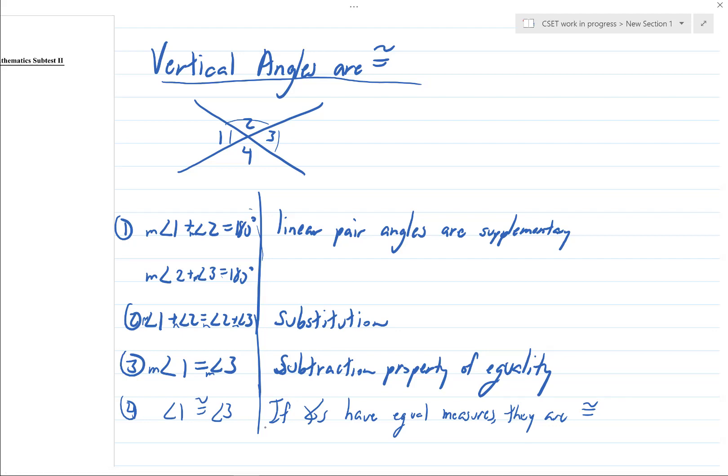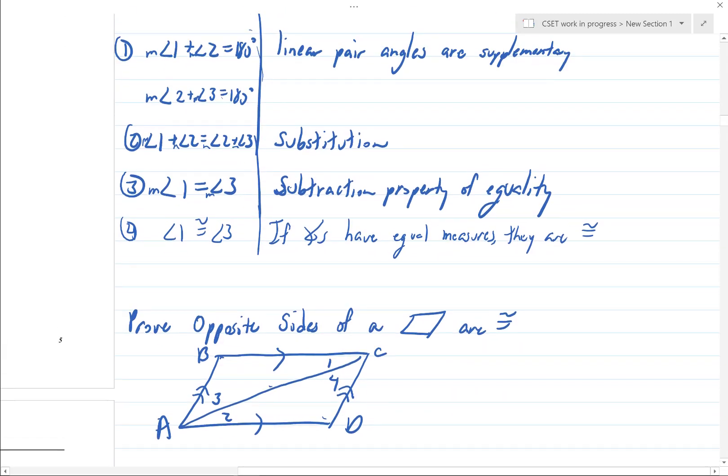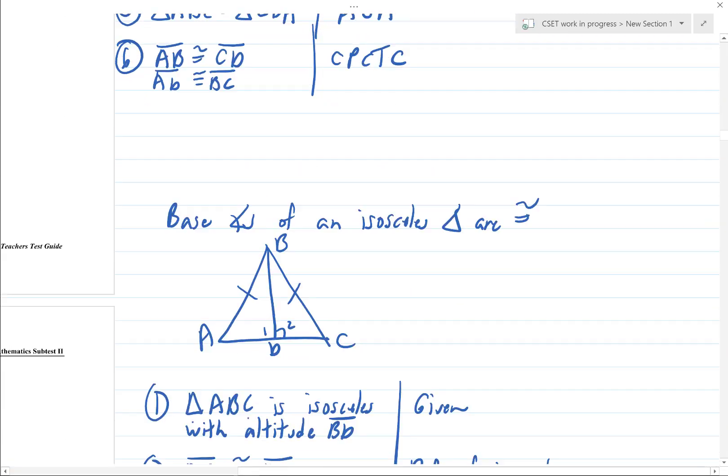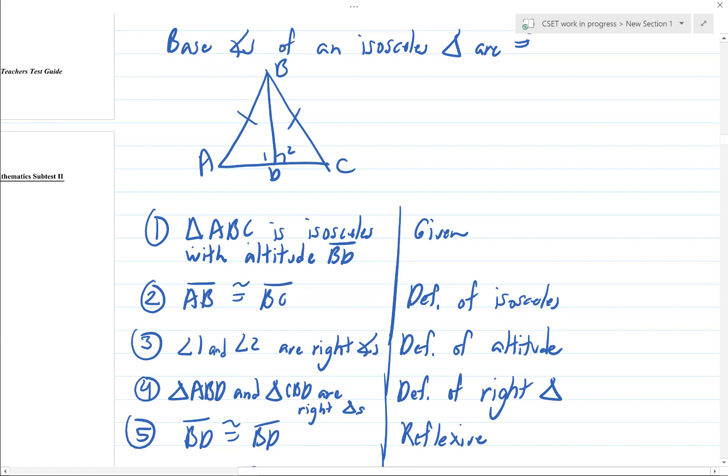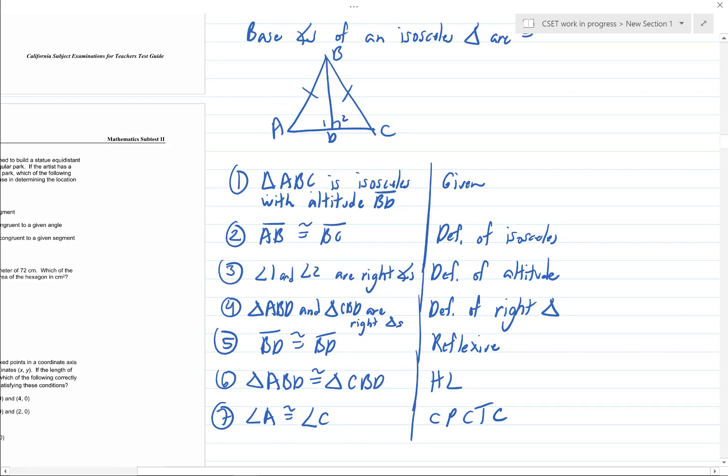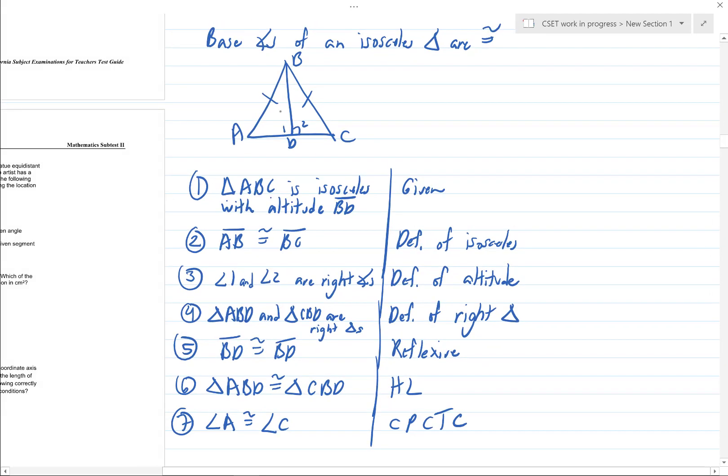The base angles of an isosceles triangle are congruent. So here's what that would look like: you just prove you have an isosceles triangle, so by definition the legs are congruent. You draw an altitude, definition of, yeah, so the altitude makes right angles with the base.